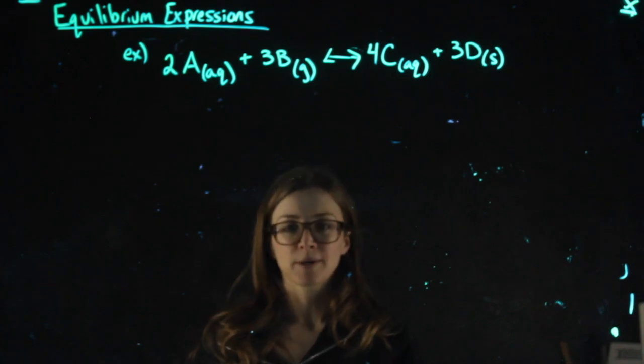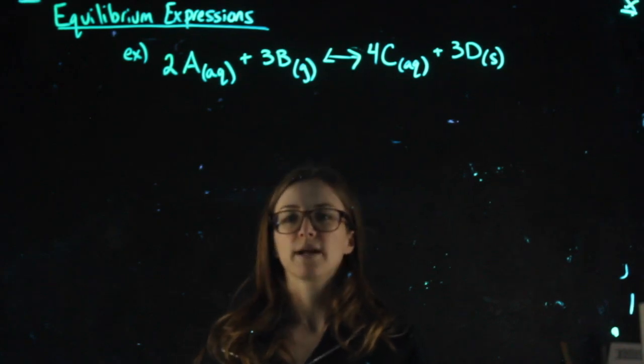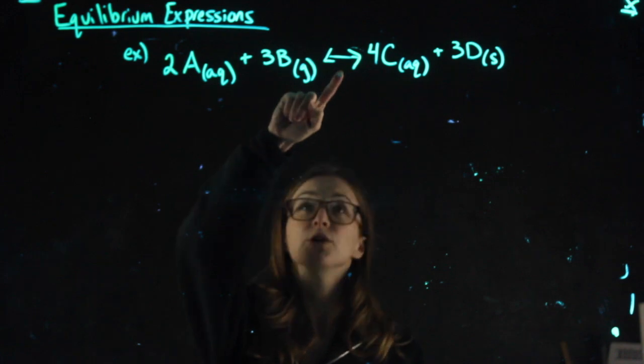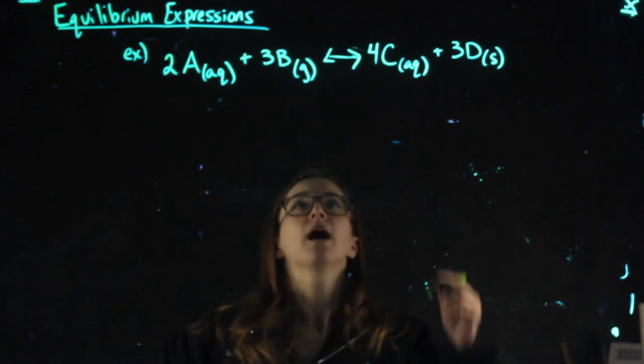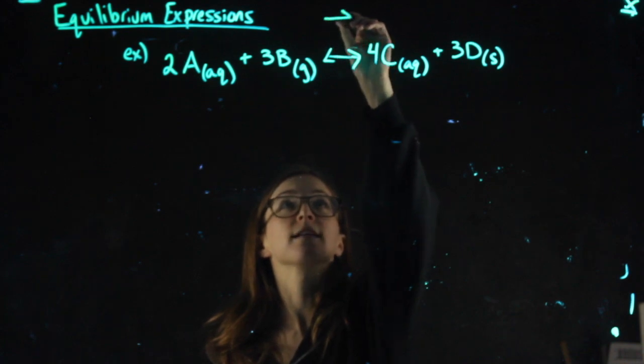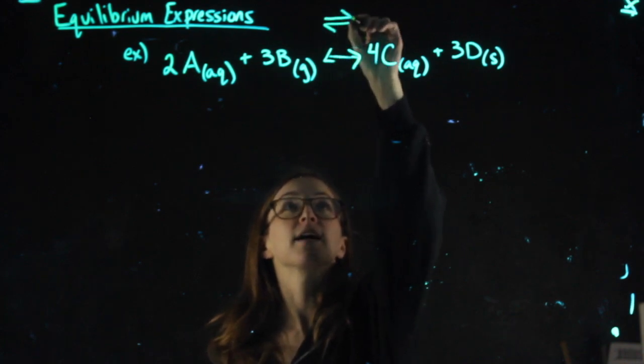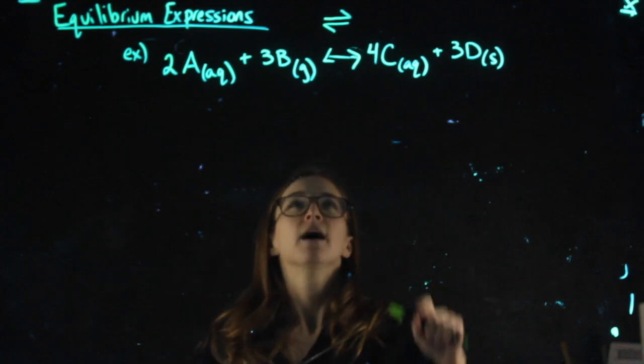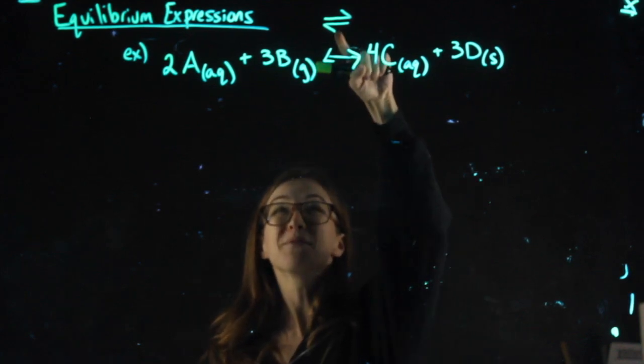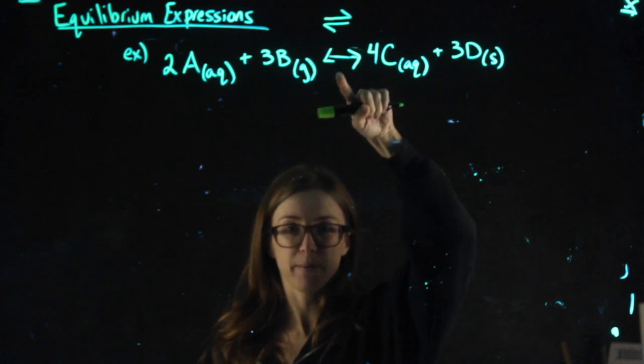All right, so equilibrium expressions are something we write when a reaction is at equilibrium. We'll know it's at equilibrium because the arrows will be drawn both ways. Sometimes you'll see it drawn like this, kind of like two arrows where the ends of the arrows got chopped off a little bit. Those are equilibrium arrows, those are also equilibrium arrows.